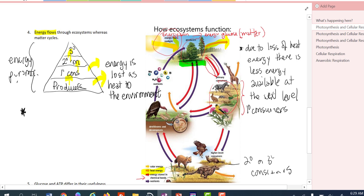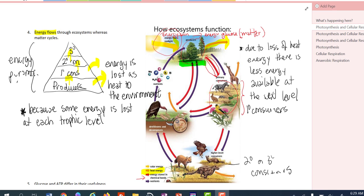Because some energy is lost at each trophic level, there must be fewer organisms as we go up the food chain.